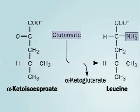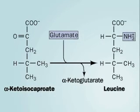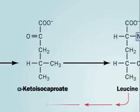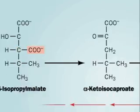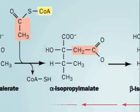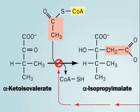Finally, an amino group is transferred from glutamate to make leucine. Alpha-ketoglutarate is a byproduct of the reaction. Leucine regulates its own synthesis by inhibiting an earlier step.